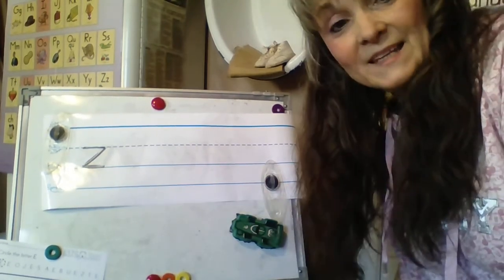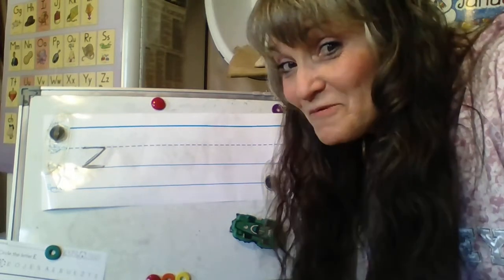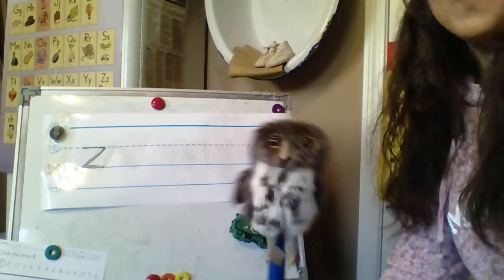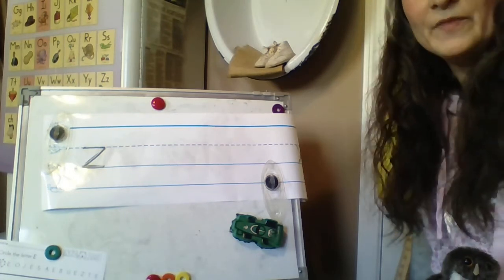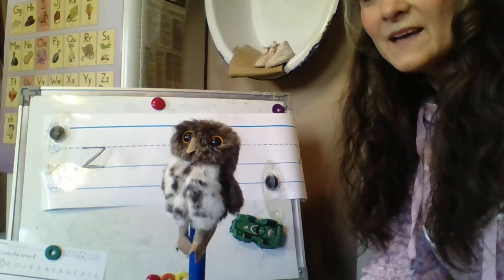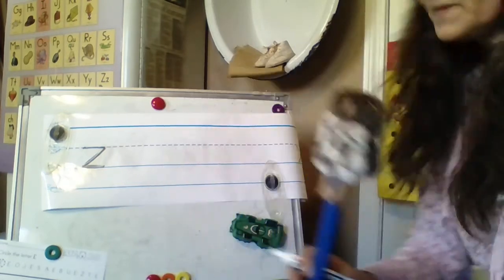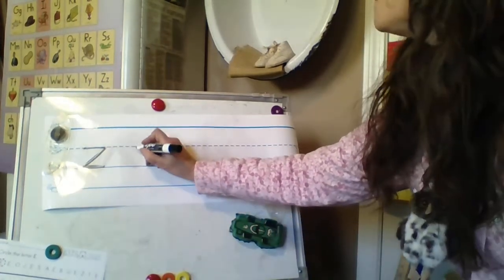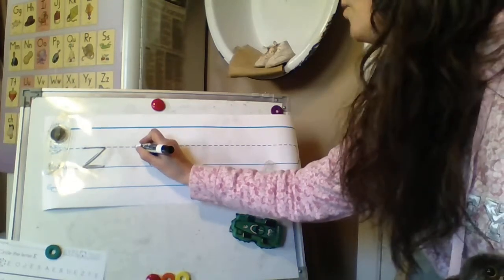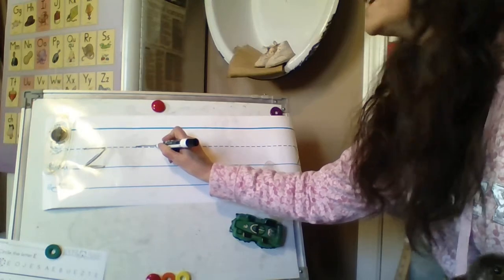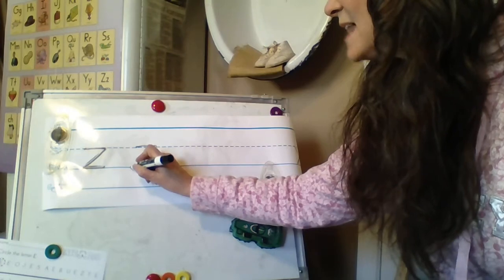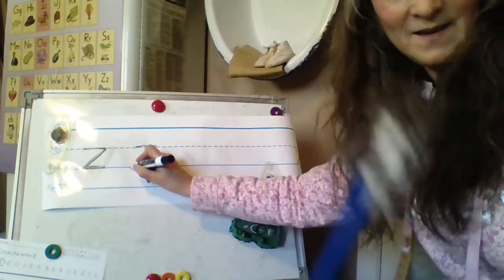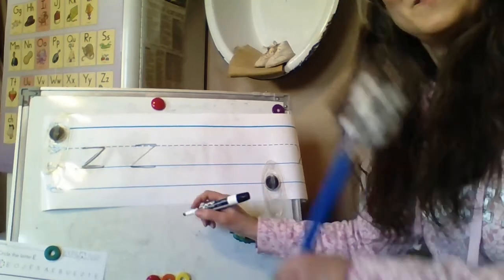Z is a plain line slide letter. But it doesn't slide right away. Z is a plain line slide letter. But it doesn't slide right away. Before it slides, the Z goes on the plain line. Before it slides, the Z goes on the plain line. Point to the plain line. Point to the plain line. Go on the plain line. Go on the plain line. Slide back to the grass line.